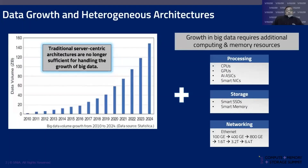Data growth is not new to anyone in the market. Everyone sees data growth that is doubling almost every six months. What that means is you need more processing, more storage, and more networking. Processing can happen with CPUs, GPUs, AI ASICs, as well as SmartNICs.